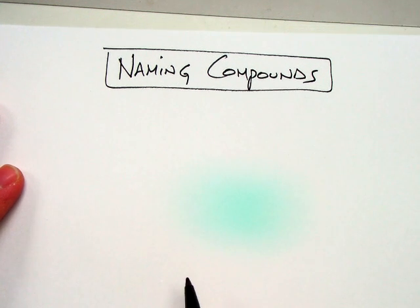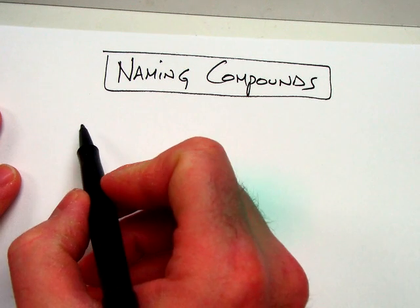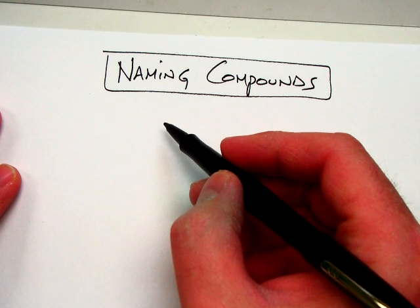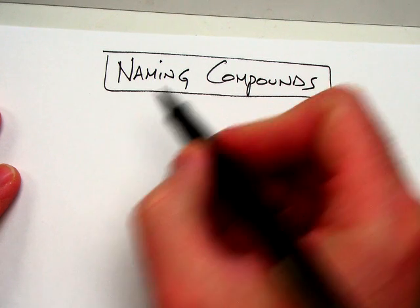So when you name a compound, the first thing you want to recognize is what are the different parts that you have, and it all depends on if you start out with a metal or a non-metal.